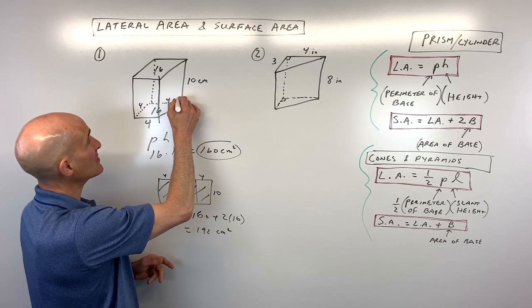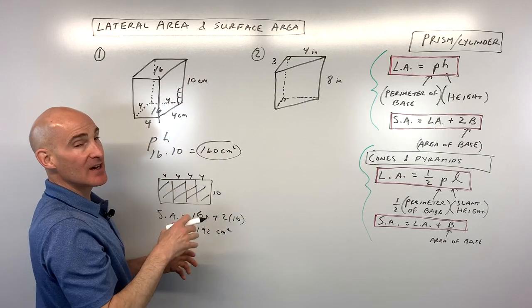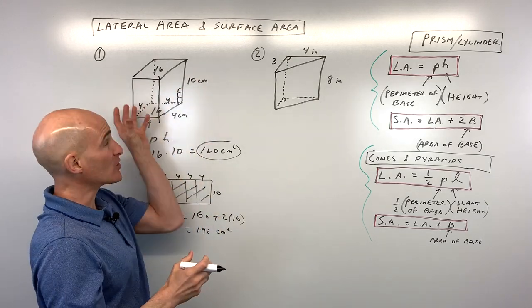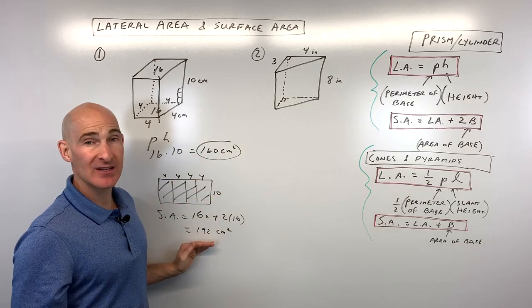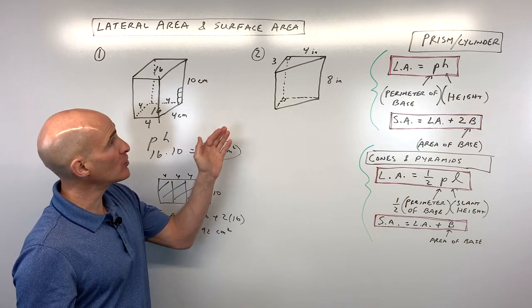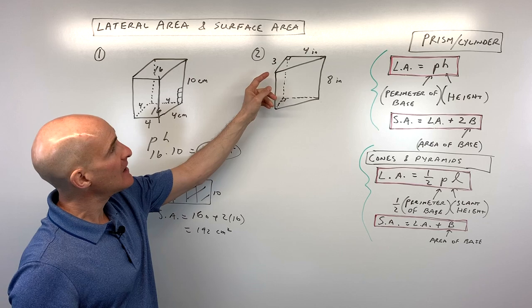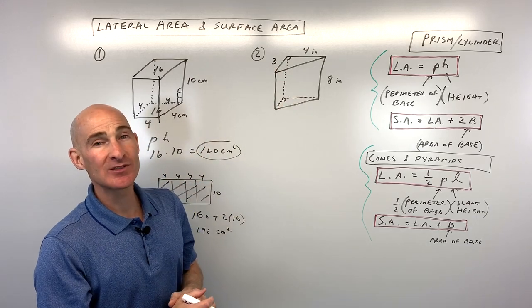It's like covering the outer surface with little one-by-one square centimeters — 192 of them would cover it entirely. That was a fairly straightforward example. Let's go to number two, which is a bit more challenging.